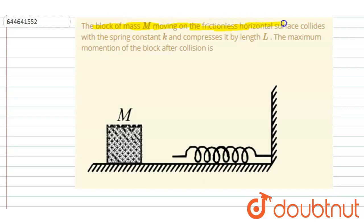The block of mass m moving on a frictionless horizontal surface collides with a spring of constant k and compresses it by length l. What is the maximum momentum of the block after the collision?